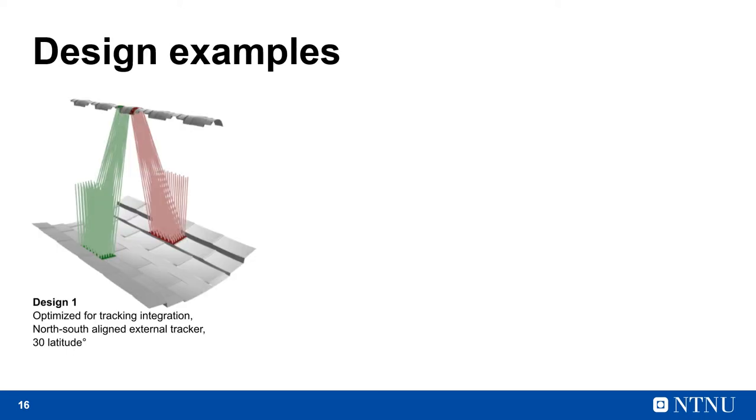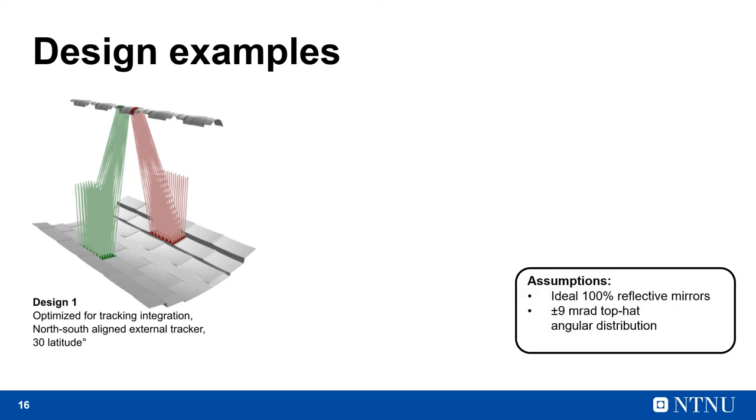The big question now is, does this work? To try, we optimized two design examples. The first example is designed to be combined with a north-south aligned single axis external tracker. We optimized and simulated it using ray tracing, where we assumed ideal mirrors, and we took manufacturing tolerances into account by simulating it under light with an angular extent of plus minus 9 milliradians.